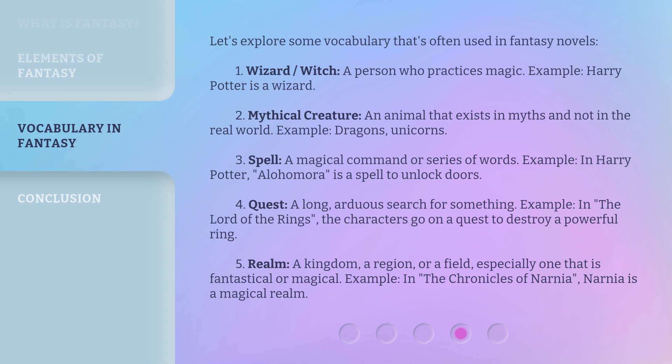Third, spell — a magical command or series of words. Example: in Harry Potter, Alohomora is a spell to unlock doors. Fourth, quest — a long, arduous search for something. Example: in The Lord of the Rings, the characters go on a quest to destroy a powerful ring.